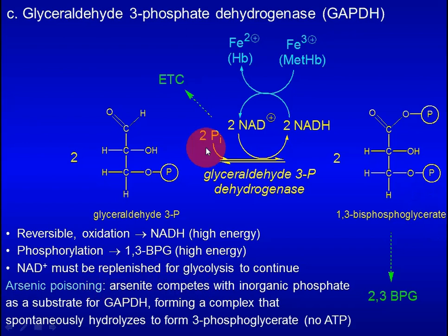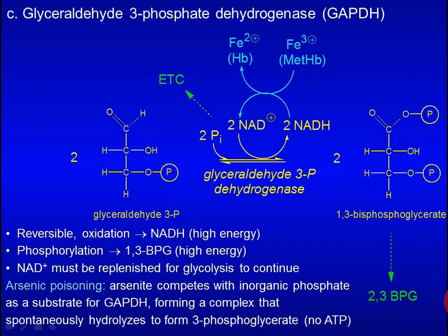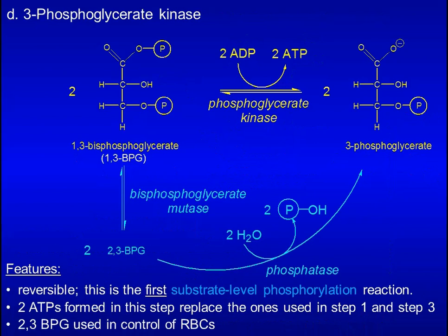Arsenite competes with inorganic phosphate to bind to GAPDH, forming a complex that spontaneously hydrolyzes to form 3-phosphoglycerate without any ATP being produced. It is the reduced ATP production that eventually kills the cell. In the next step, phosphate is transferred from the high-energy compound 1,3-BPG to ADP, giving rise to ATP. After loss of phosphate, 1,3-BPG is converted to 3-phosphoglycerate. This is the first substrate-level phosphorylation reaction, yielding 2 ATP.